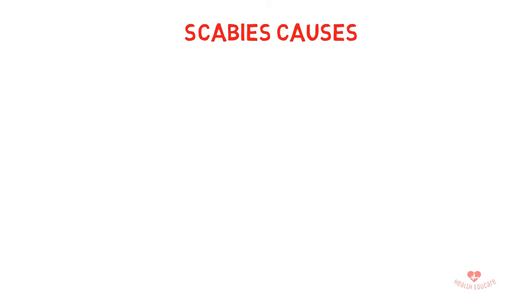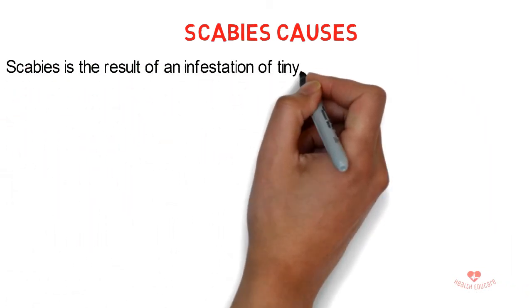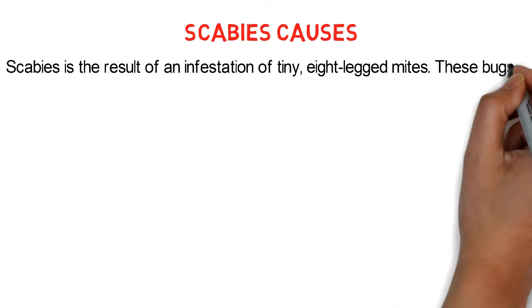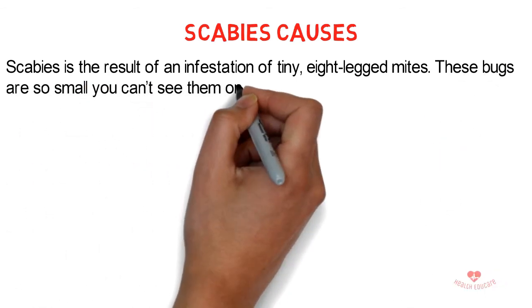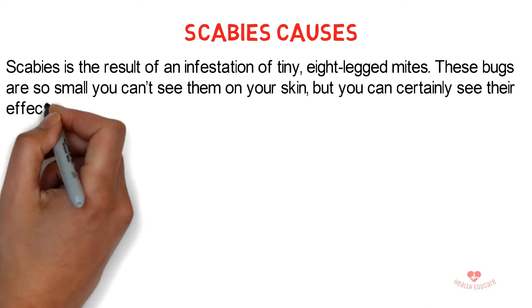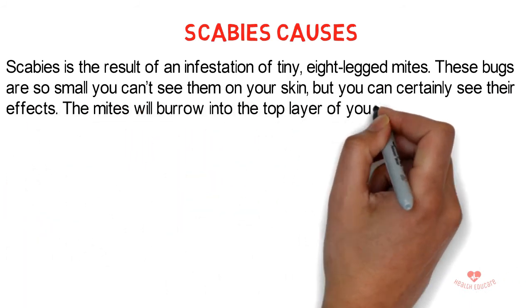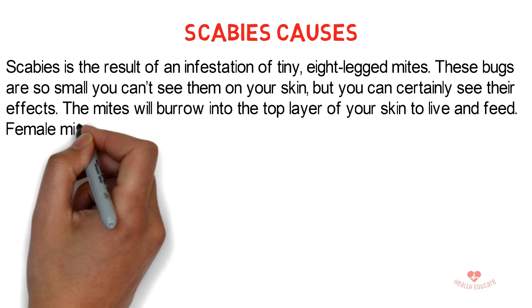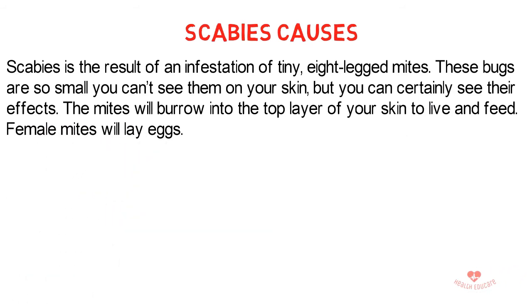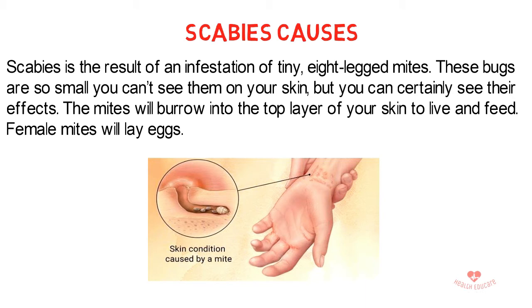What causes scabies? Scabies is the result of an infestation of tiny, eight-legged mites. These bugs are so small you can't see them on your skin, but you can certainly see their effects. The mites will burrow into the top layer of your skin to live and feed. Female mites will lay eggs. Your skin will react to the mites and their waste, and you'll develop a red, itchy rash.